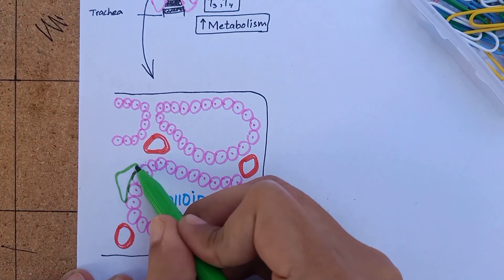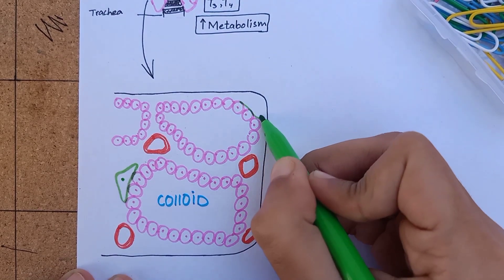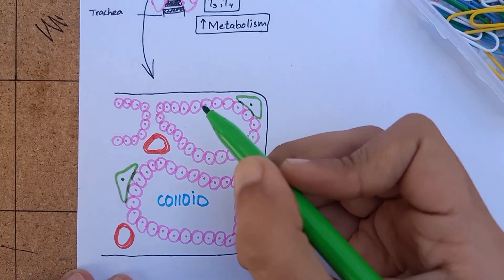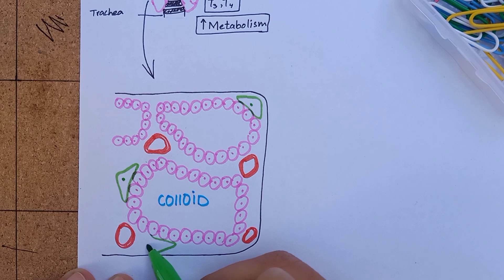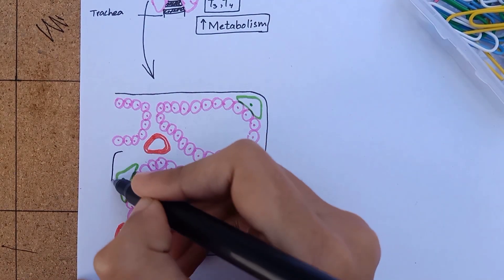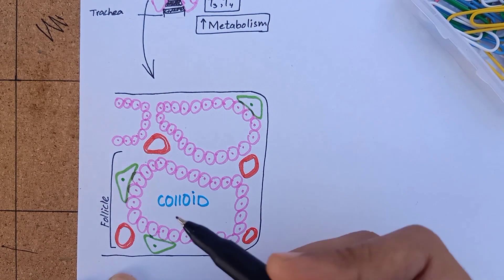The thyroid gland also contains C cells that secrete calcitonin. Calcitonin is a hormone that contributes to the regulation of plasma calcium concentration. But right now we are only looking for T3 and T4.